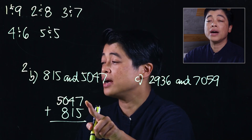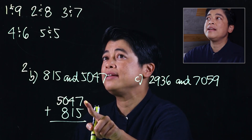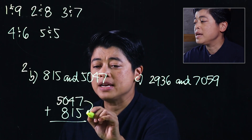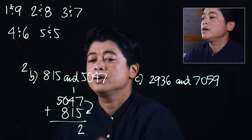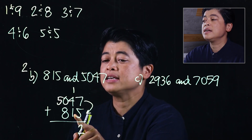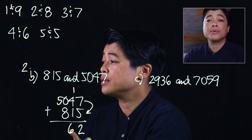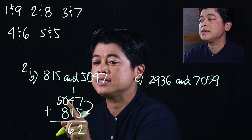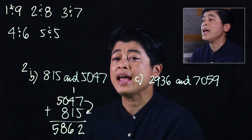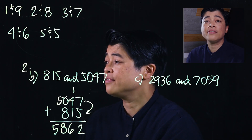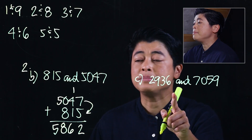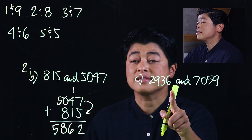We start with 7, which is the bigger digit compared to 5. We need 3 to get to 10, so we have an extra 2 from the 5, which means that's 12. We carry, or regroup. Therefore we have 4 plus 1 is 5, plus 1 is 6. Starting with the bigger digit 8, plus 0 is 8, and 5. So the sum of 815 and 5047 is 5862.